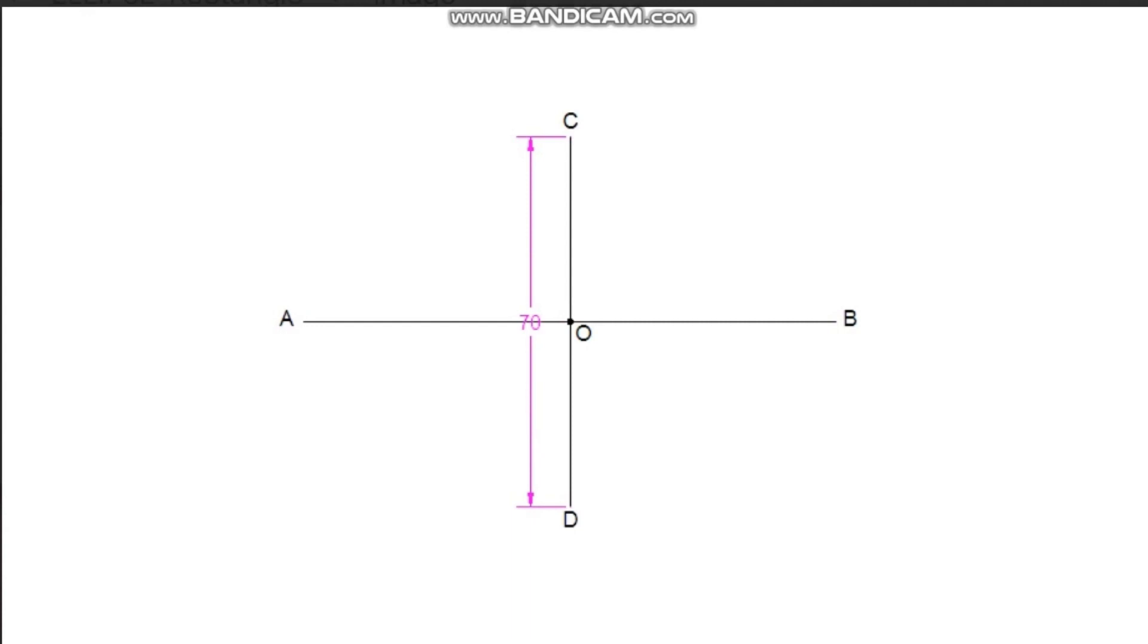Now, draw a rectangle with its major axis as length and minor axis as breadth. Name the corners of the rectangle as P, Q, R and S.